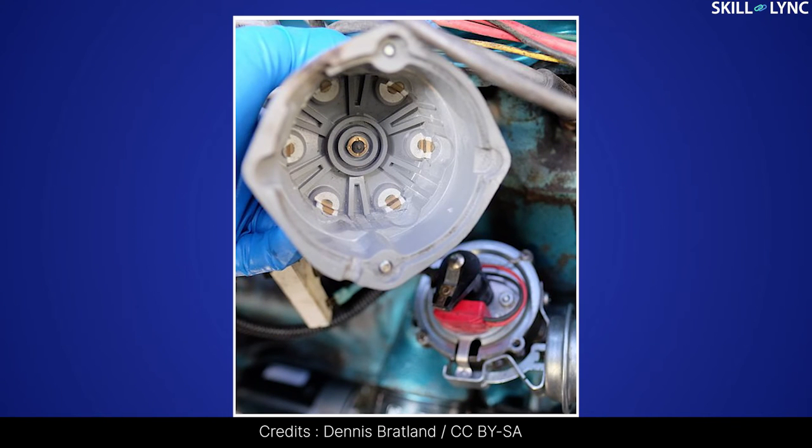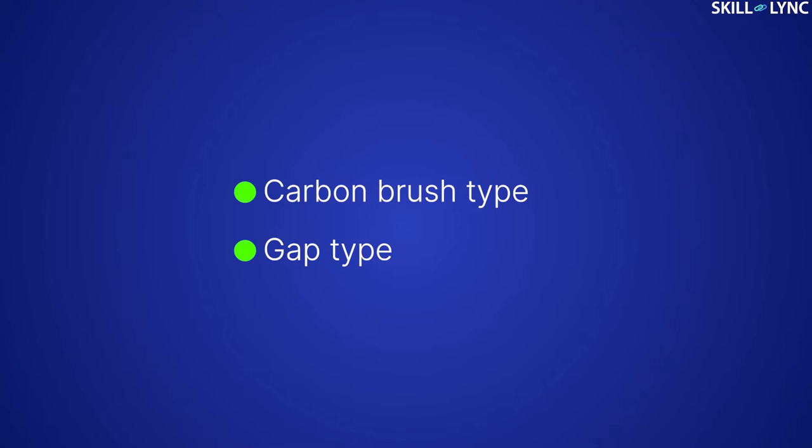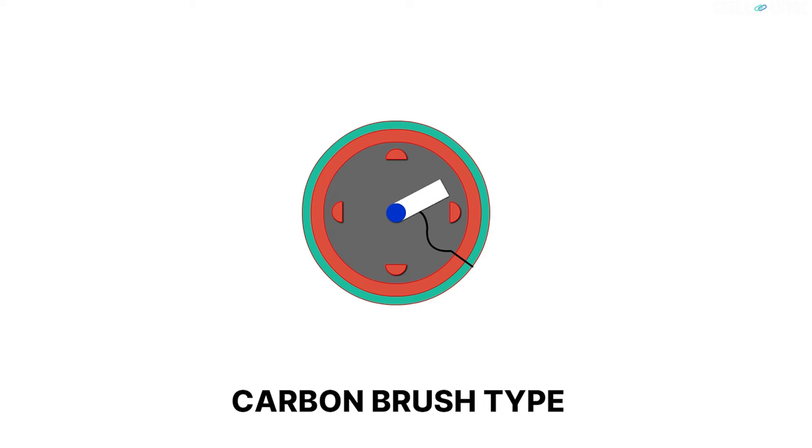A distributor is used in case of multi-cylinder engines and it's of two types: a carbon brush type and a gap type. If the rotor arm slides over the metallic electrode in the distributor, it is said to be a carbon brush type distributor.